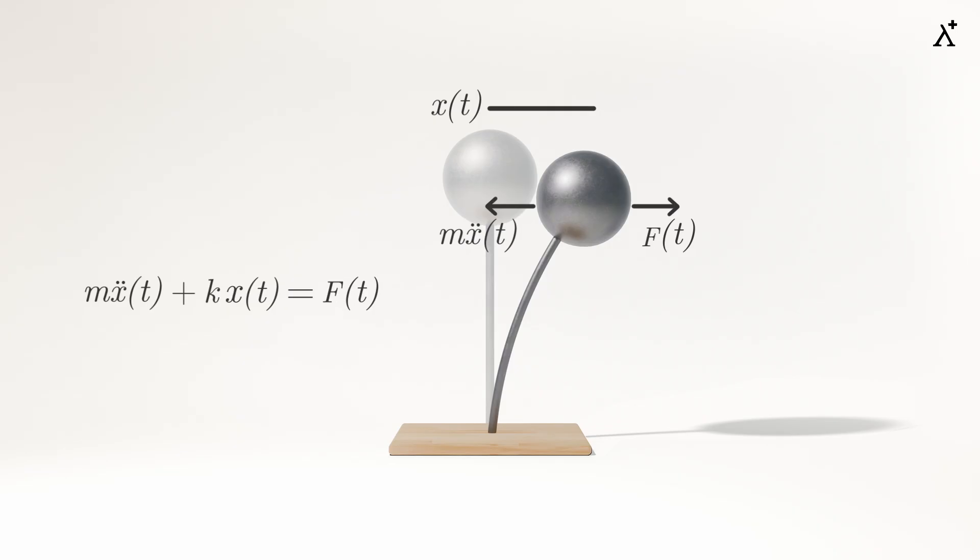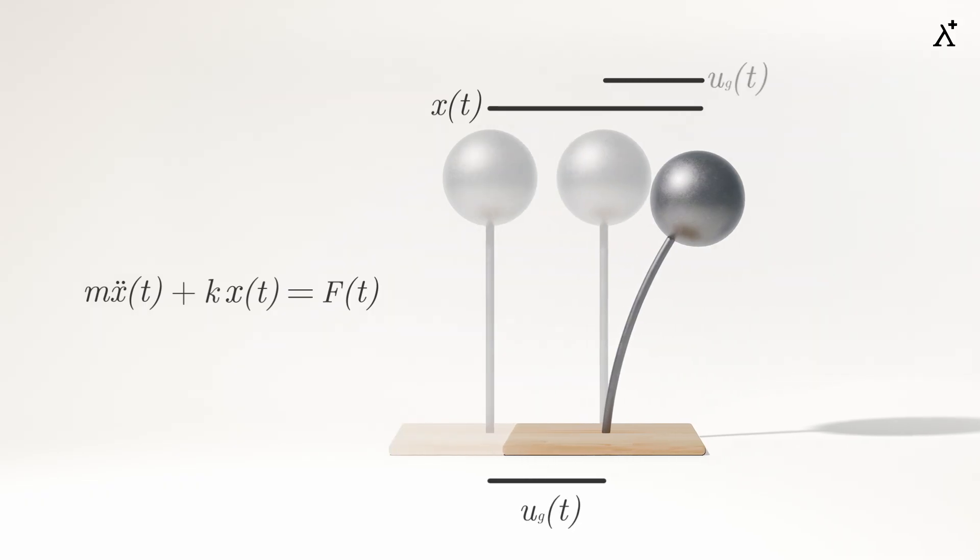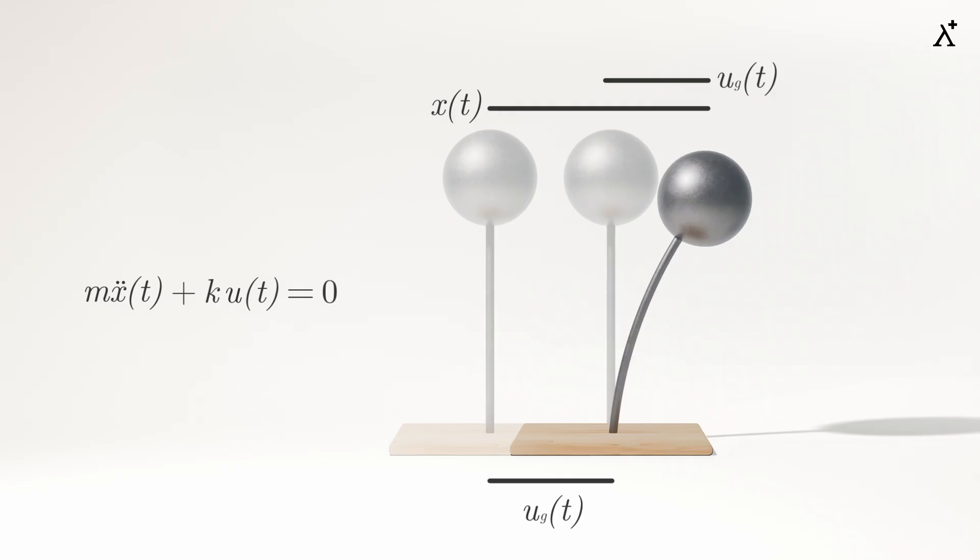In the case of ground motion, there is no external force acting on the ball, and the inertial forces are generated due to the acceleration of the ball, which is the sum of the relative acceleration and ground acceleration. This results in the following equilibrium equation, which could also be written as...